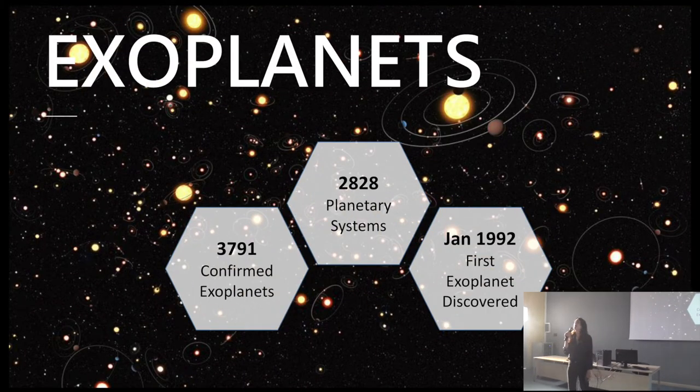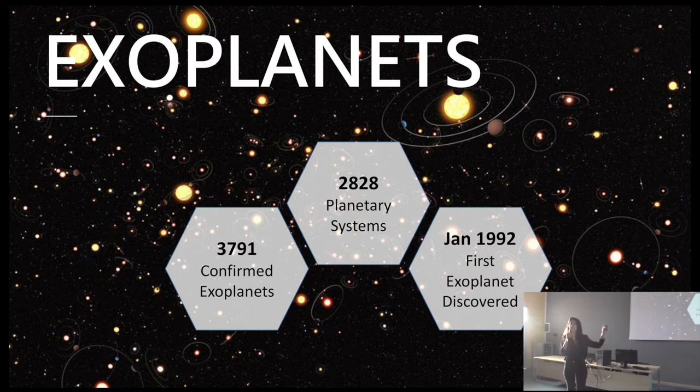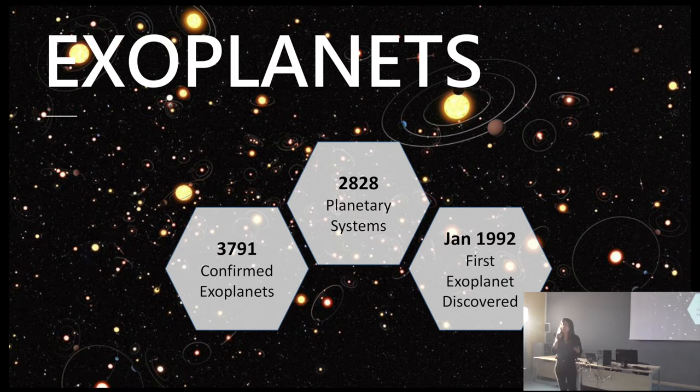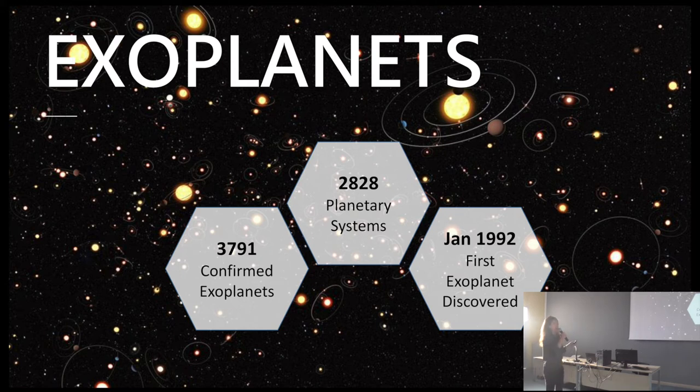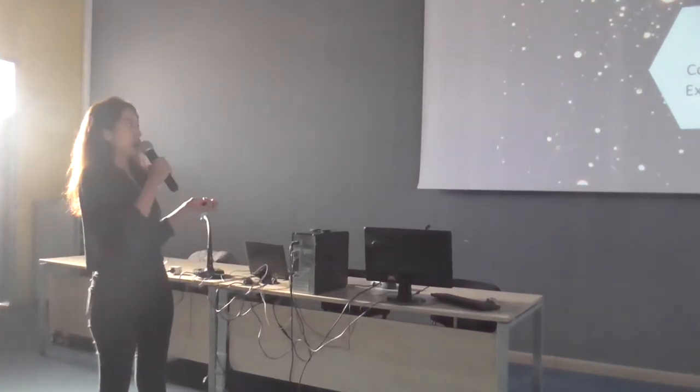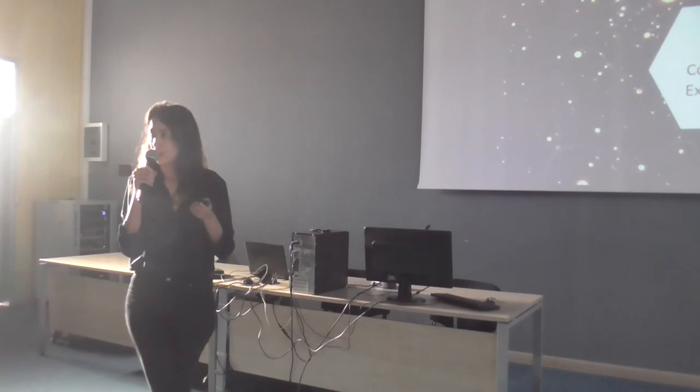I searched for exoplanets. So what are these exoplanets? Exoplanets are planets outside our solar system. Just like our home, we have a lot of different other stars that have planets orbiting them. So let's first make it clear. A star is something that emits light. Just like our sun. A planet is an object orbiting a star. Just like our planet Earth.